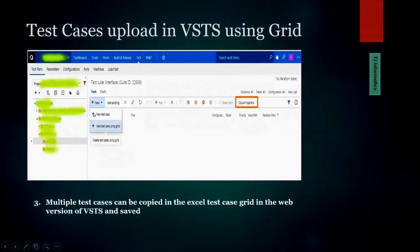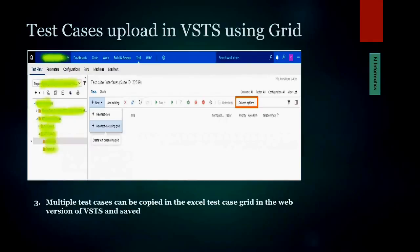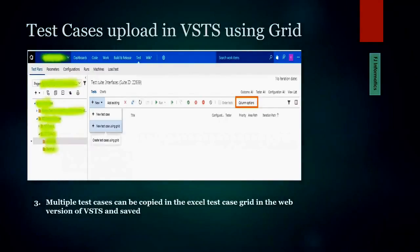There's additional flexibility with the Grid: you can add columns. When you click 'New Test Case Using Grid,' standard columns appear by default, but you can also add custom columns to match what you've written in your Excel sheet. You then copy your Excel test case data and paste it directly into the Grid. Multiple test cases can be copied this way in the web version.